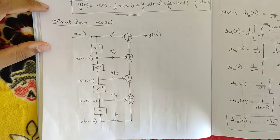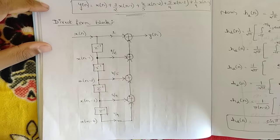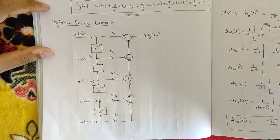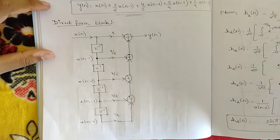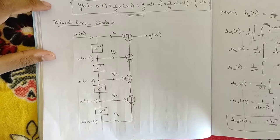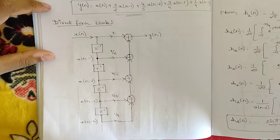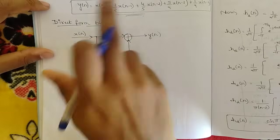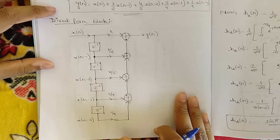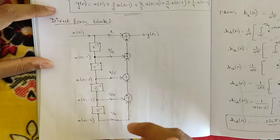That was the direct form block diagram. To summarize the procedure: given the transfer function H(z), use the definition H(z) = Y(z)/X(z), multiply X(z) to the other side to isolate Y(z), then take the inverse Z-transform to get y(n). Using that y(n) equation, draw the direct form block structure.